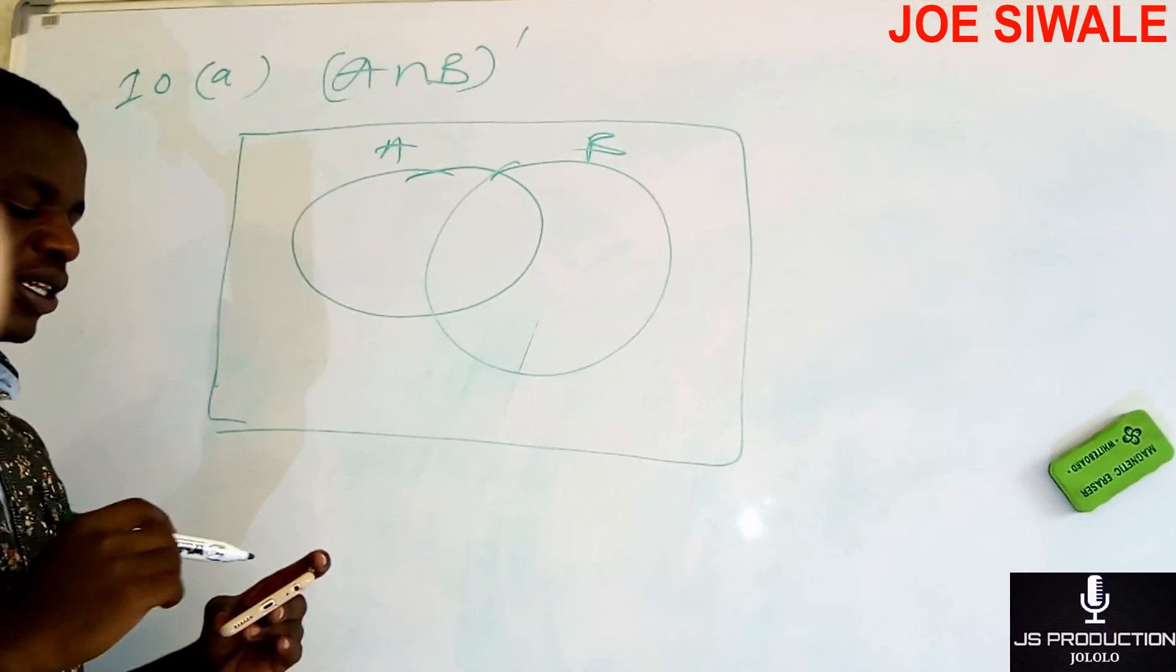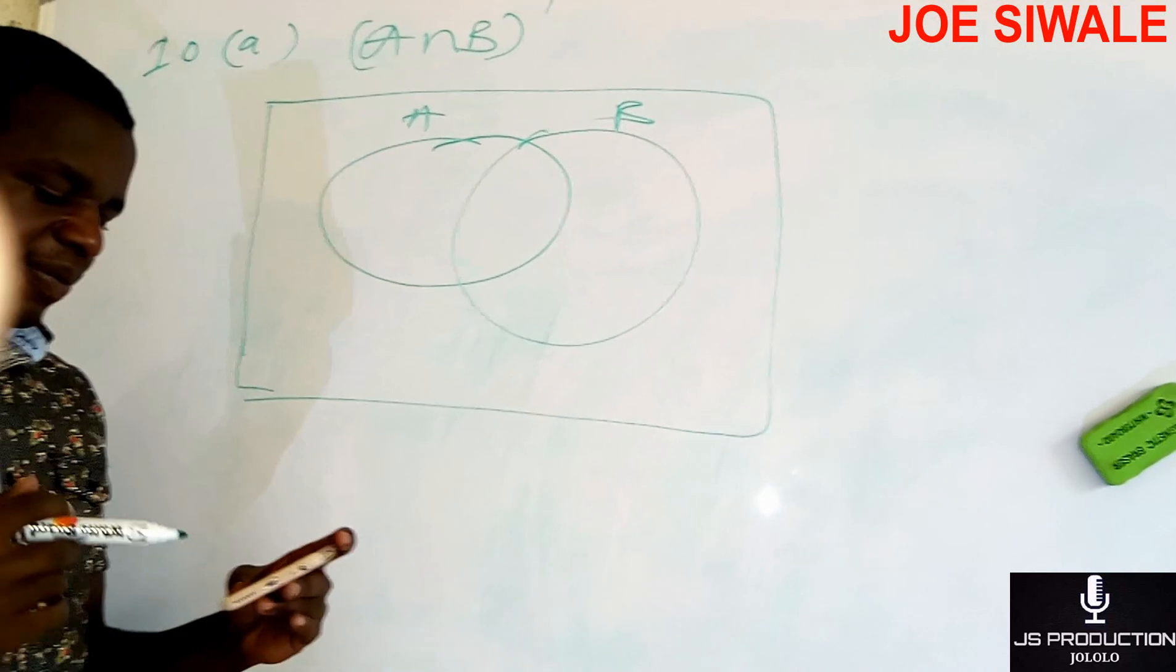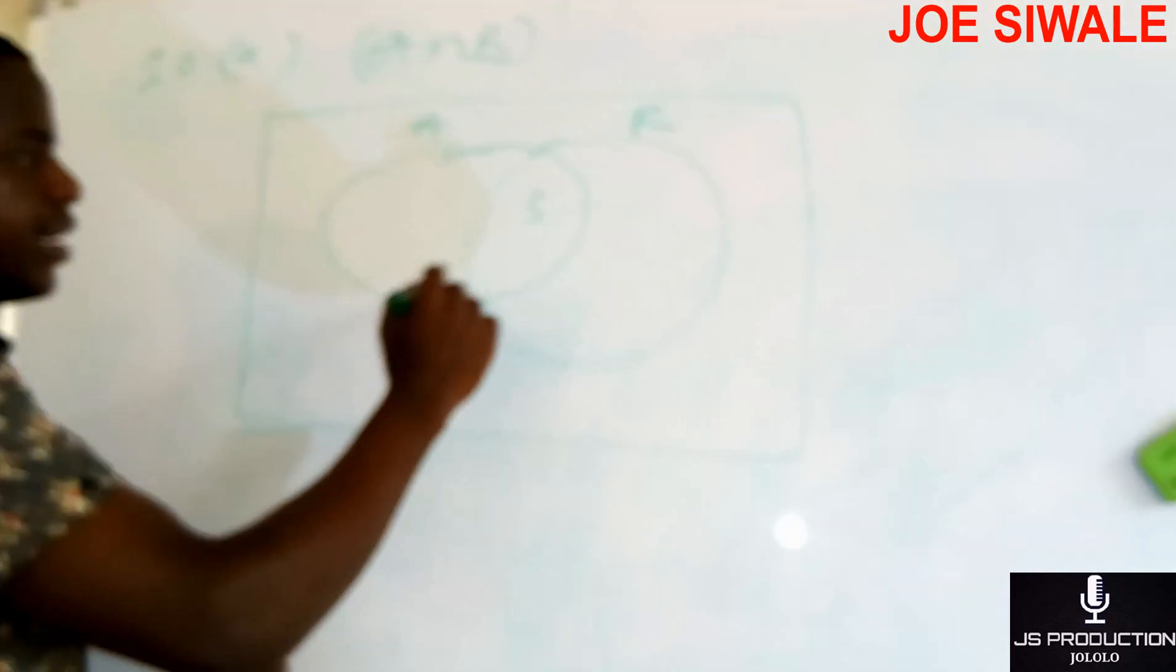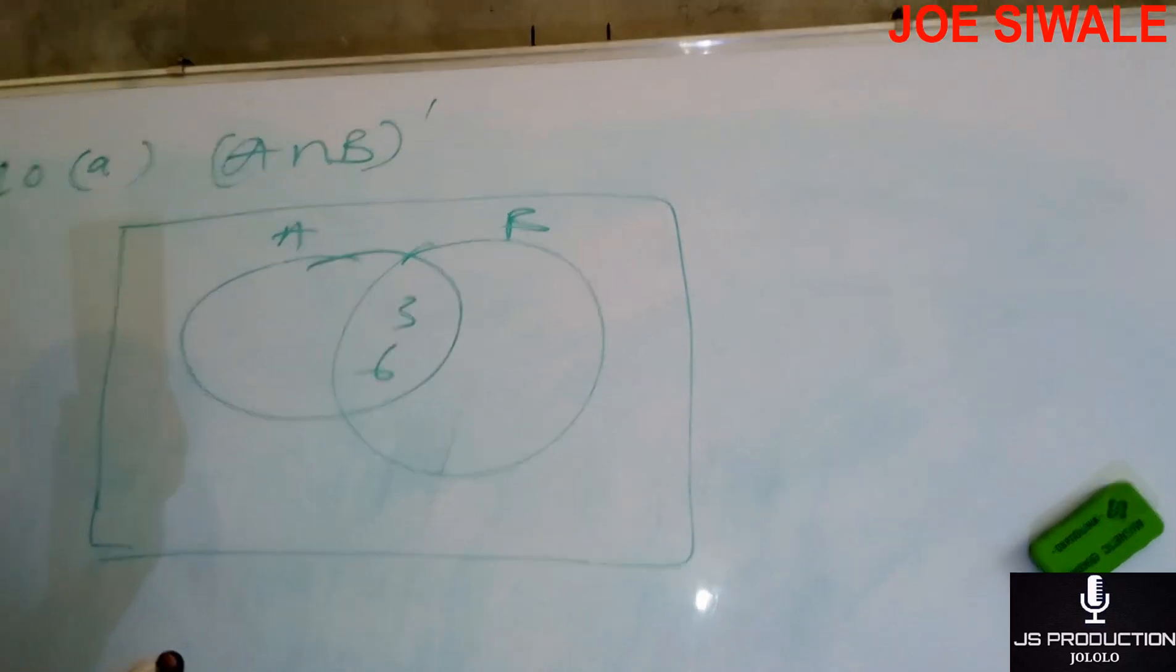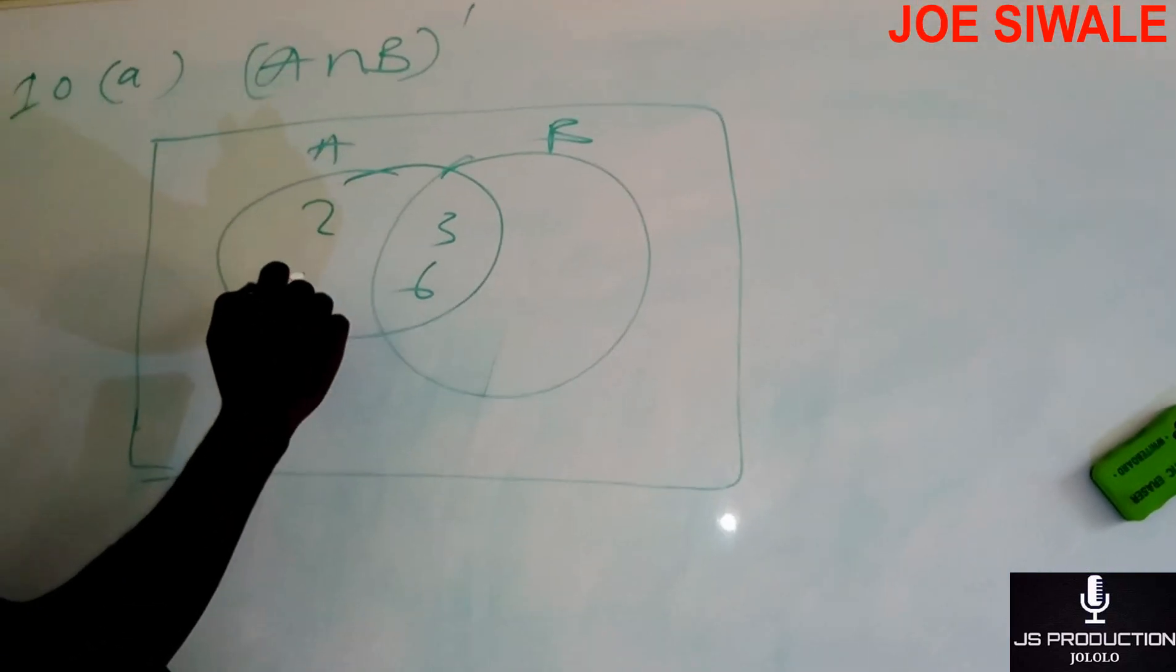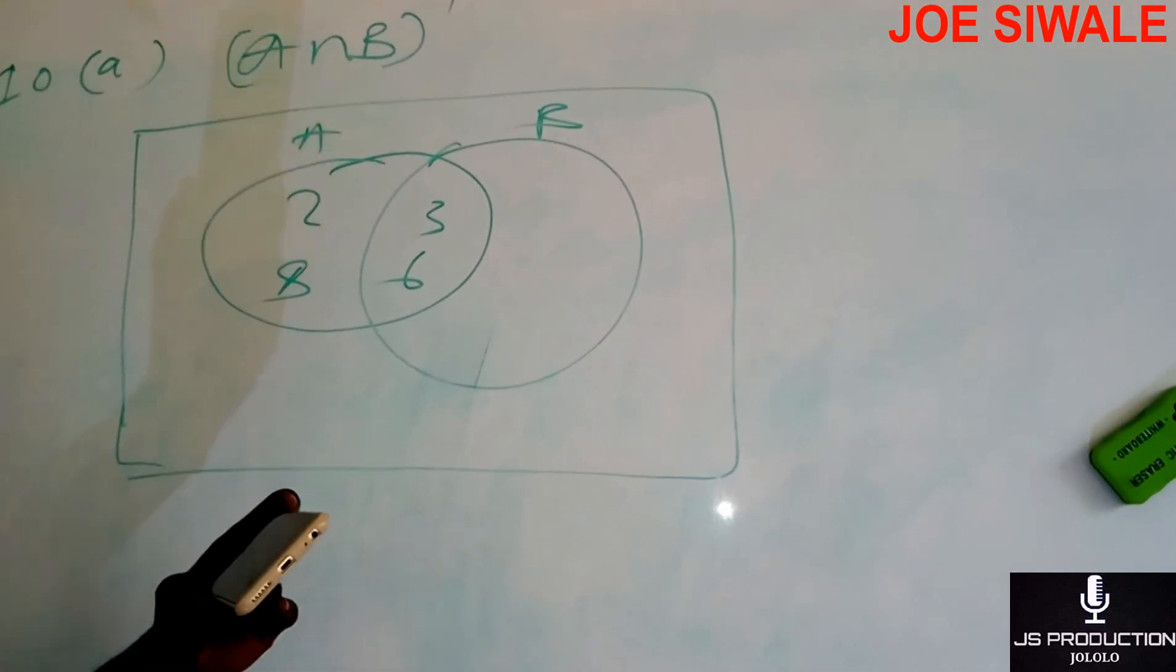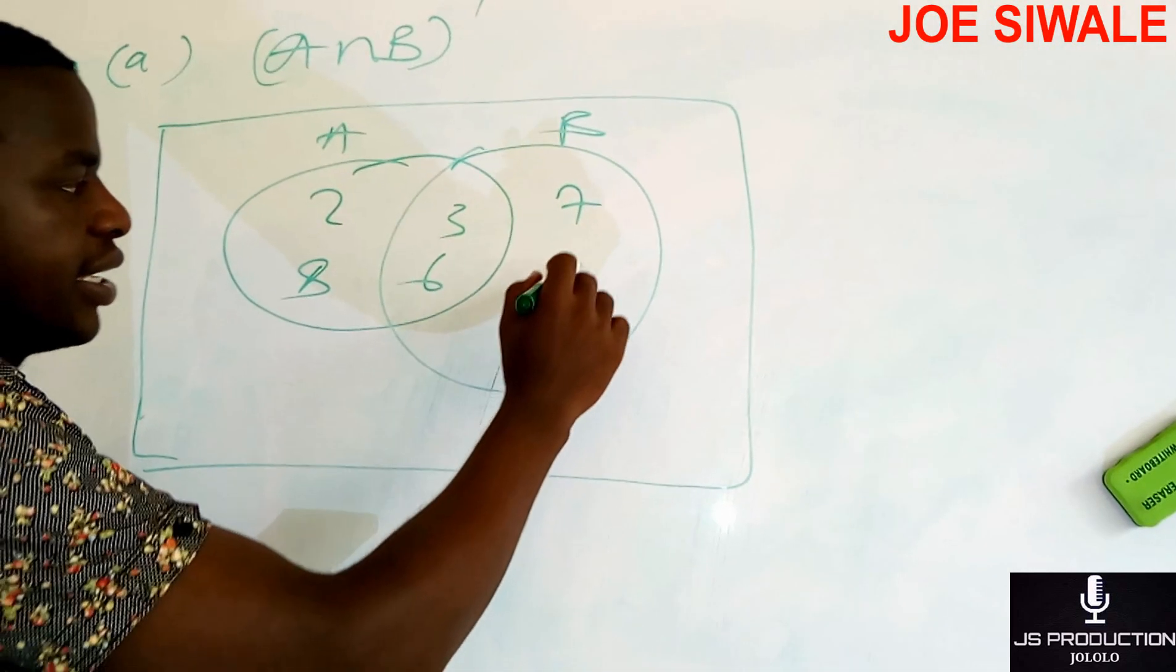I'm going to put the numbers that are common in A and in B. So the numbers that are common, I have 3 and 6. So this means in set A, I'm going to have 2 and 8. Then in set B, I'm going to have 7 and 9.